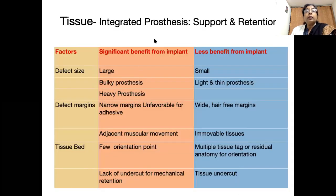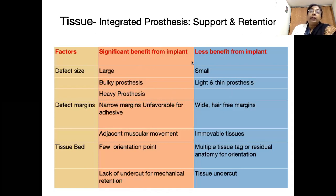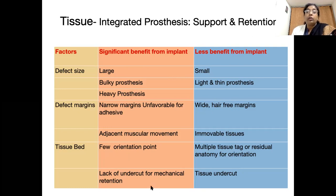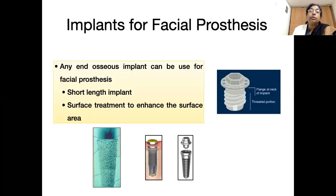We can use implants in almost any case, except in a few conditions. Where the defect is very large and adhesives cannot be used, implants can be used very well. Where there are narrow margins, very few orientation aids, or tissue undercuts are not present to retain the prosthesis, we can very well use implants.